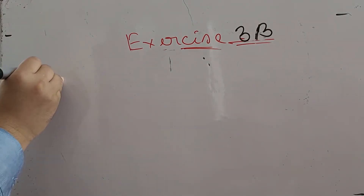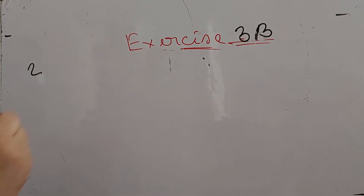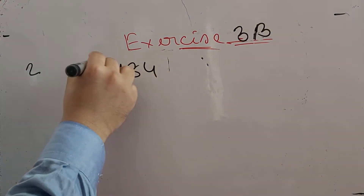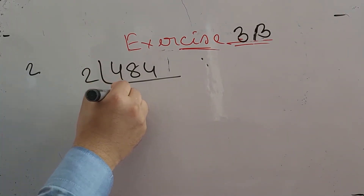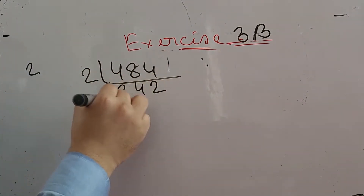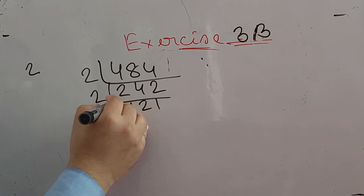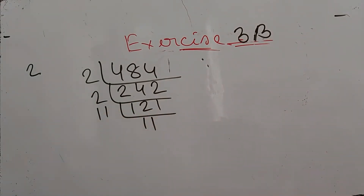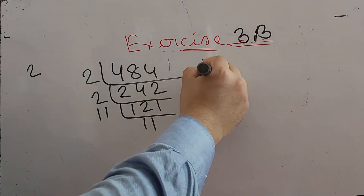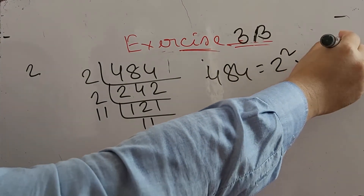Number two says: express 484 in its prime factors. We can divide 484 by two to get 242. Divide 242 by two to get 121. Divide 121 by eleven to get eleven. So 484 means two squared into eleven squared.